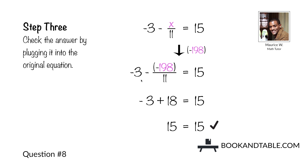Negative 1 times negative 198 makes that positive. 198 divided by 11 is equal to 18, and negative 3 plus 18 is 15. So when x is equal to negative 198, the left side of the equation equals the right side. This is the correct answer: x is equal to negative 198.